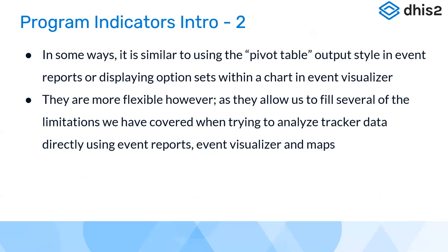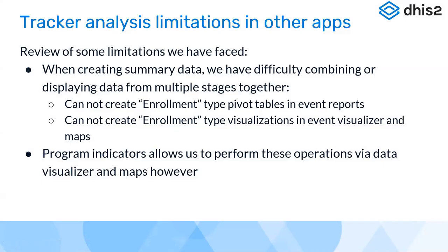Yesterday when I was doing the event reports and this morning when you did the event visualizer, there were tools available in those apps which can substitute some of those examples. There is a bit of overlap, but program indicators are more powerful. Program indicators are more flexible because they allow us to fill several limitations we encountered when trying to analyze tracker data directly using event report, event visualizers, and maps.